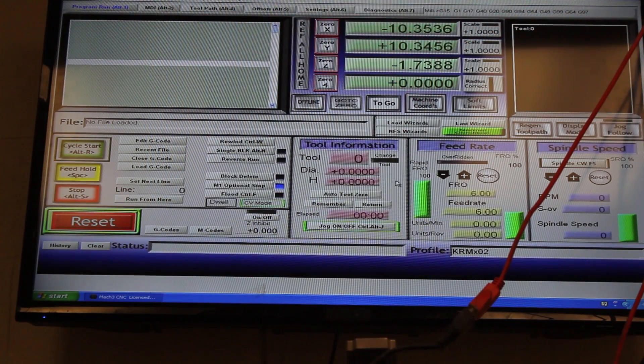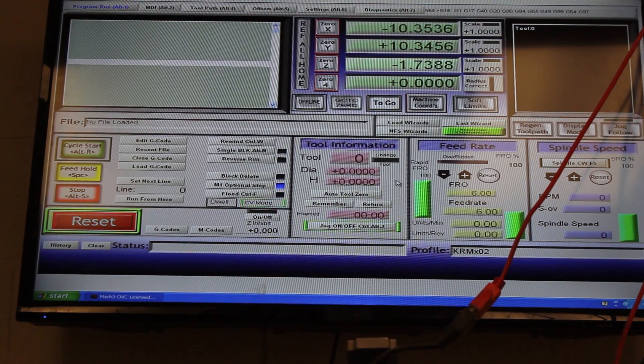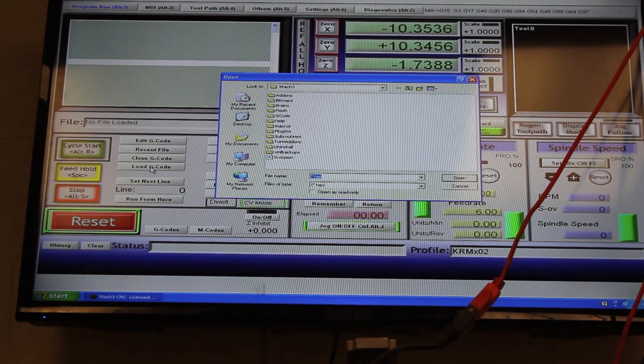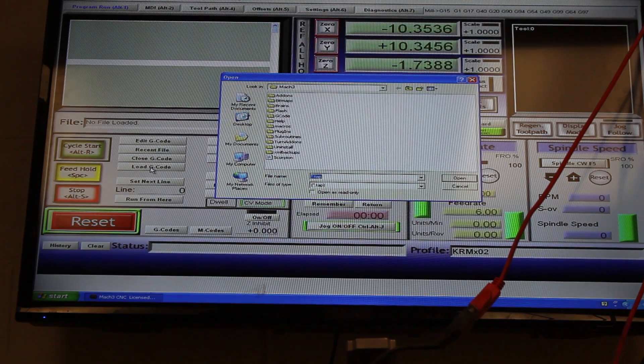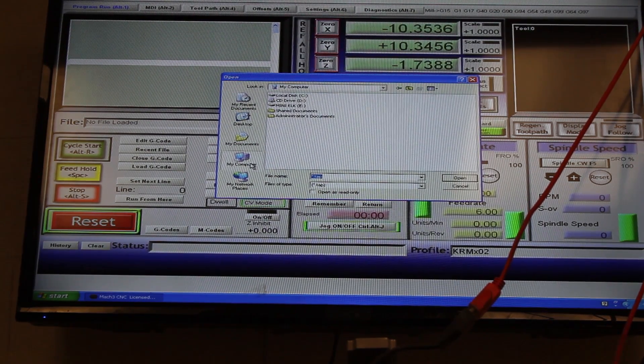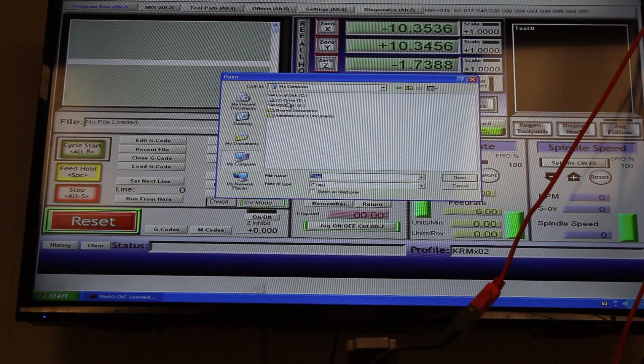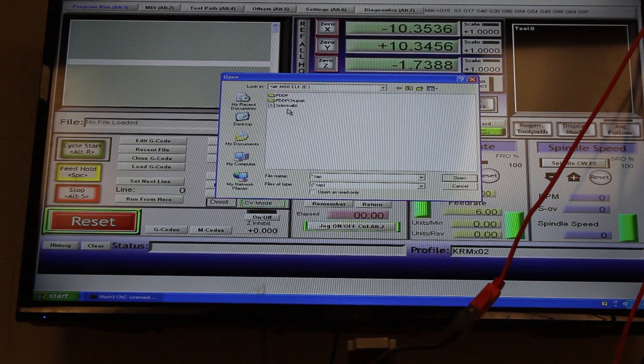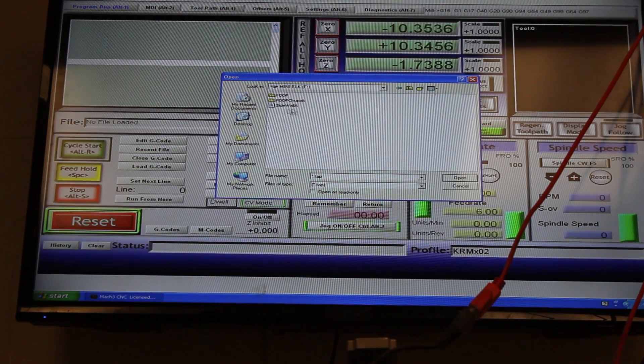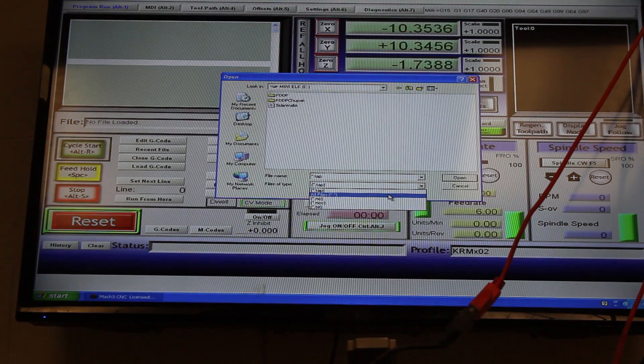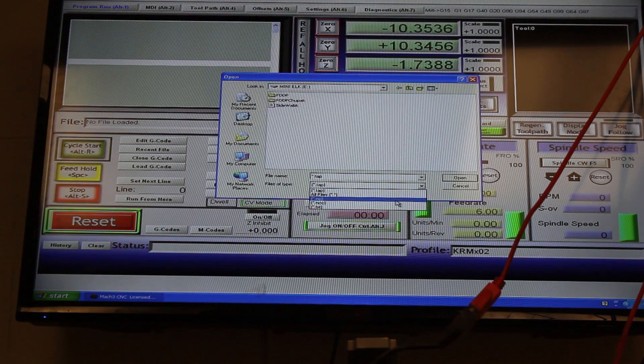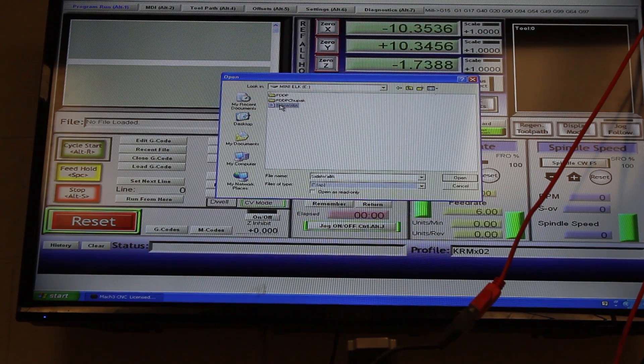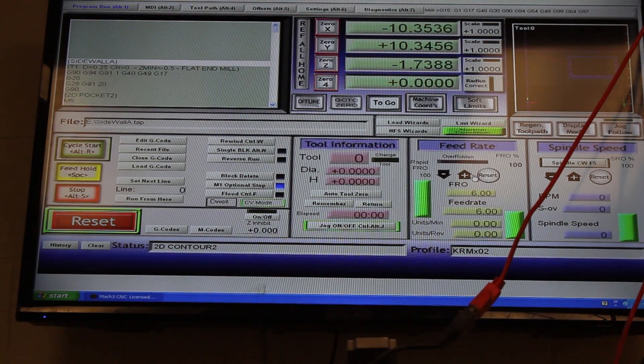So now the next thing we are going to need to do is actually load our CNC G-code file into the computer. So we're going to hit load G-code and we're going to hit my computer. We're going to find your USB that you're using and you're going to find the file that we made in Autodesk Fusion 360. That file saved as a .tap file so if you're having trouble trying to find your files you can hit .tap or all files .nc. I'm going to hit .tap and there's sidewall A. And now we are going to load it.